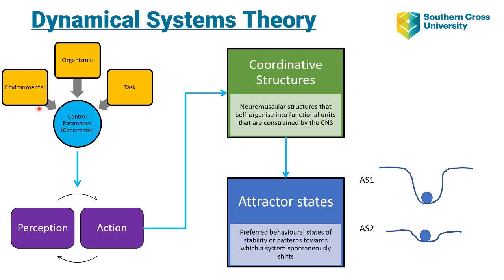Environmental constraints might include lighting conditions, rain, or wind. Organismic constraints are within the individual — limb lengths, weight, size, distribution of fast-twitch and slow-twitch fibres, and so on. These are plugged in as constraints to couple with the environmental constraints. Task constraints refer to what is required: do I need to run, walk, or catch a ball, and what are the rules surrounding that task? All of these are dynamic, changing from one point in time to another, and they influence how we perceive and make decisions about actions.